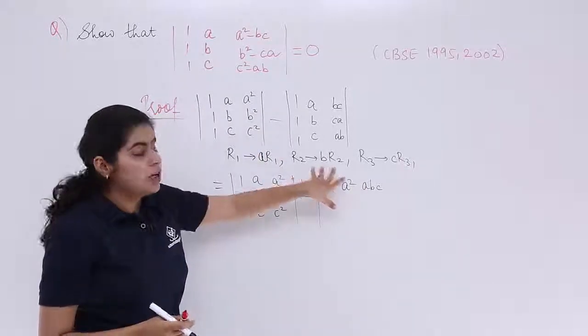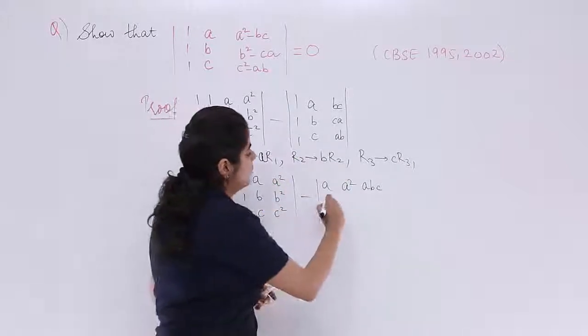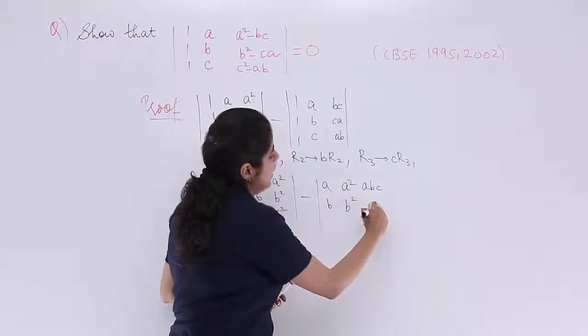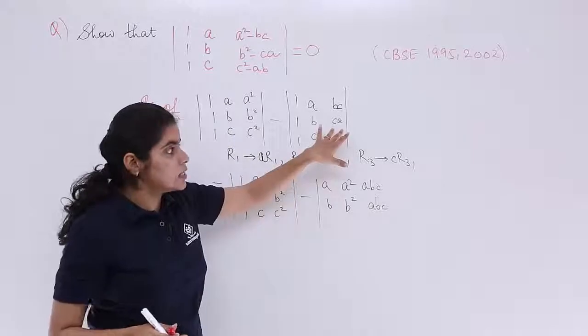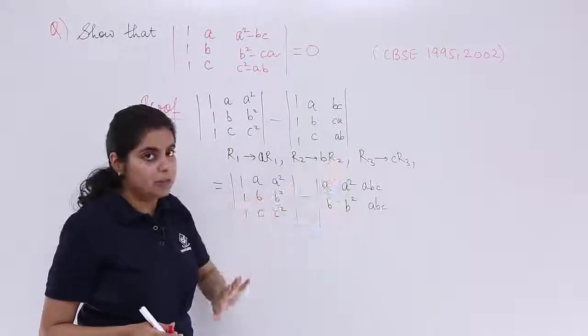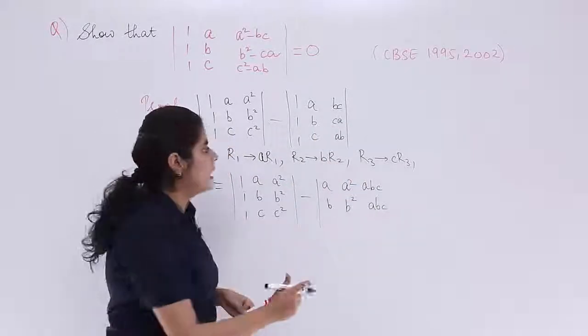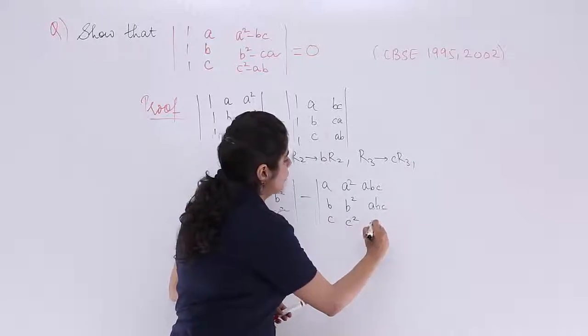We are going to operate in the manner R1 is such that A has to be multiplied with R1. So, 1 into A is A, A into A is A square, BC into A is ABC. Now, B with R2. So, it is B, B square, ABC again, because CA is already there, you need to multiply by B. Similarly, C with R3. So, it is C, C square, ABC.